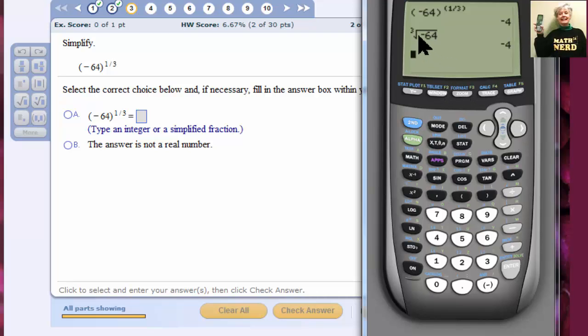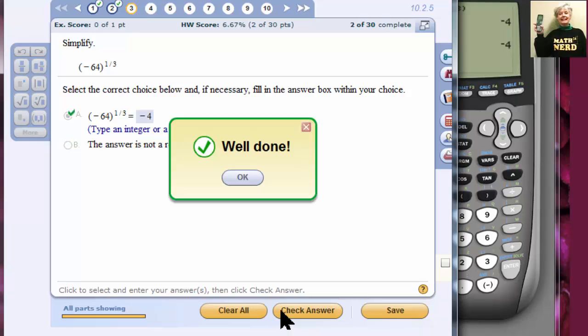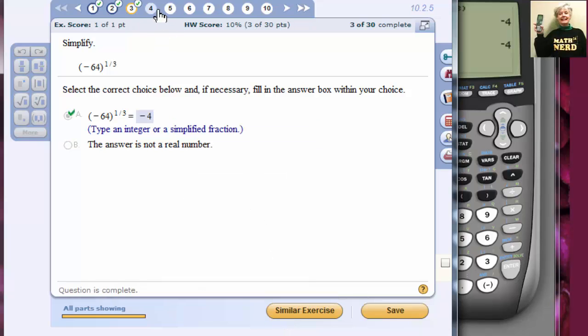Now, if you have an older calculator, you would have to use parentheses around your negative 64, even after you made a radical sign. Alright, let's put the answer in. Negative 4. Check answer. Yes, this is correct. Let's move on to 4.